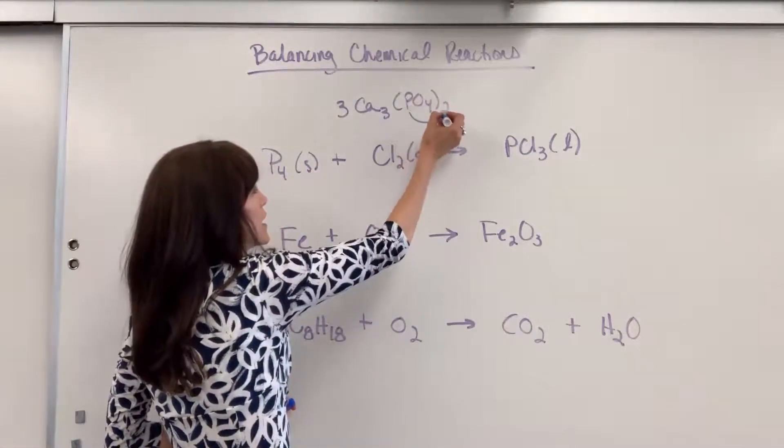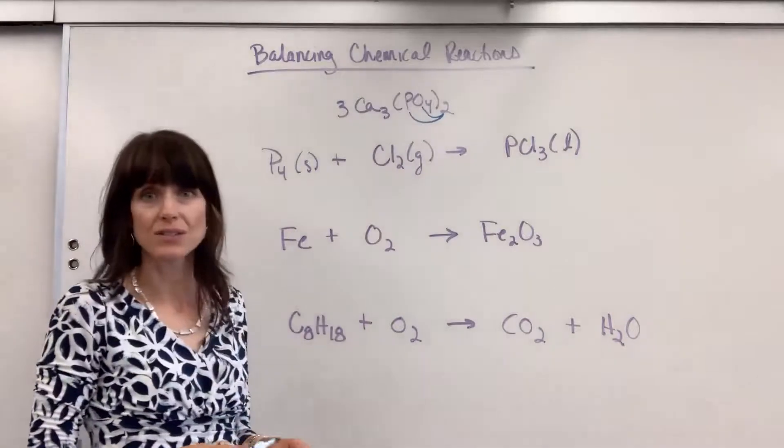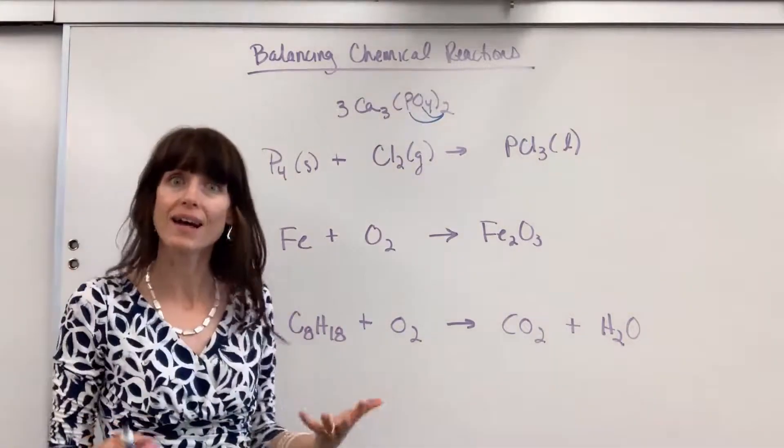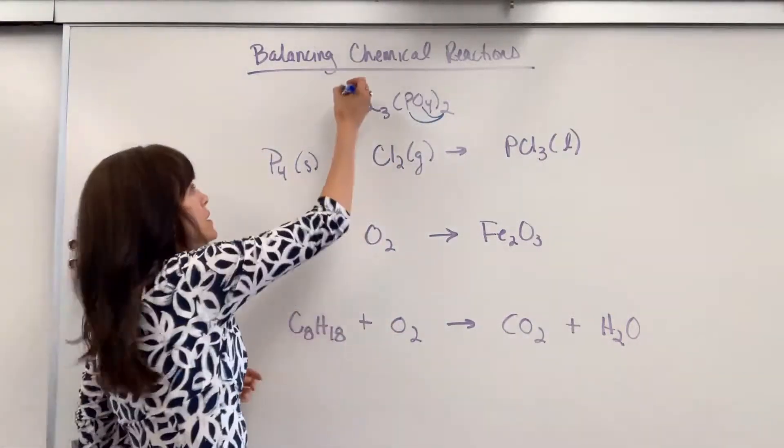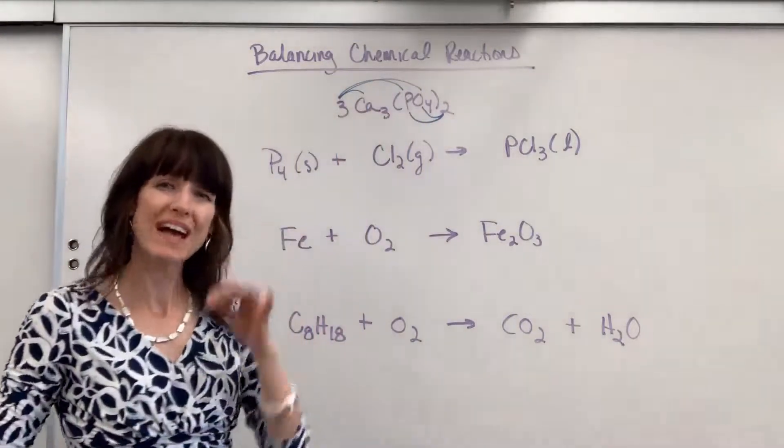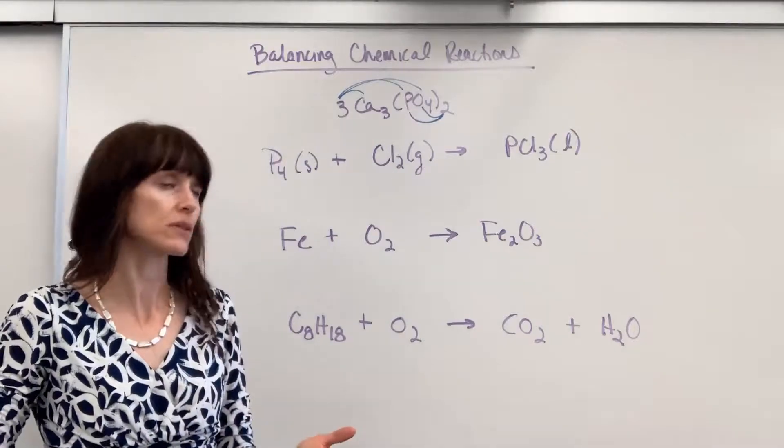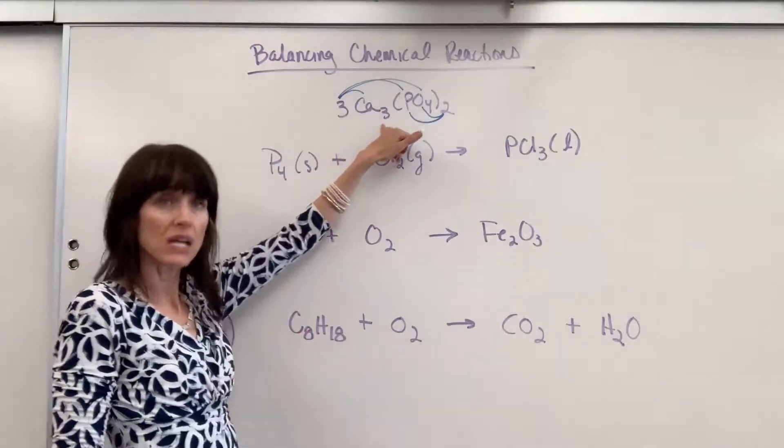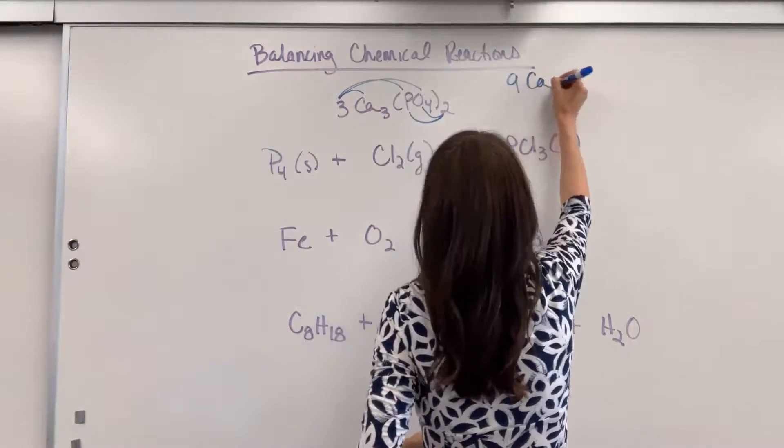That two distributes to the phosphorus and to the oxygen. Now let's go ahead and add in this molar coefficient, three. So three will distribute, that coefficient distributes to every atom in the compound. So three times three, I'm going to have nine calcium.